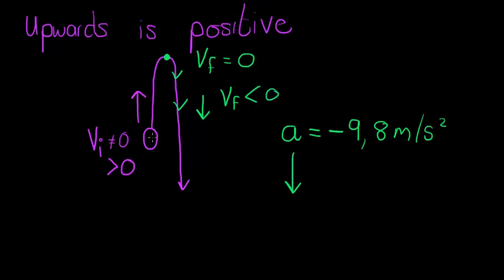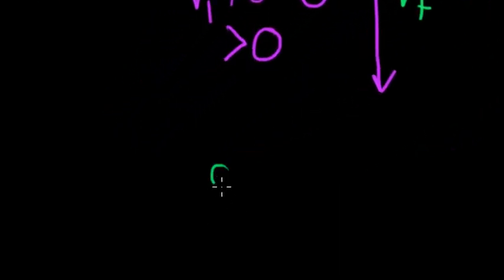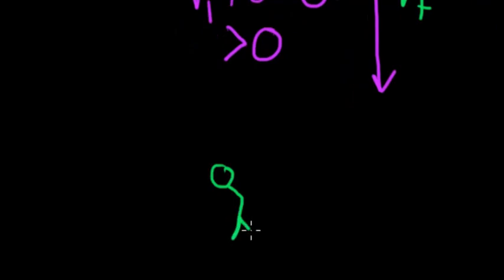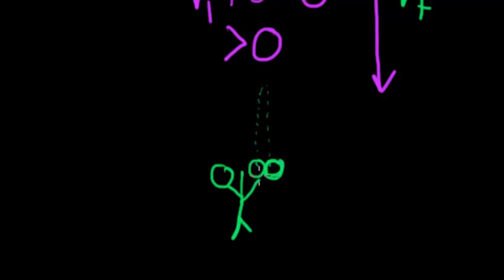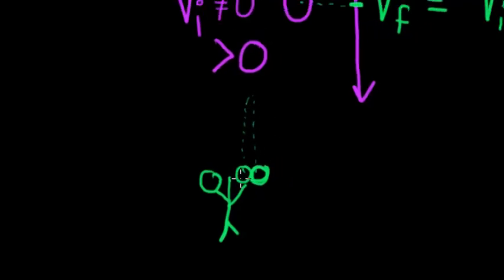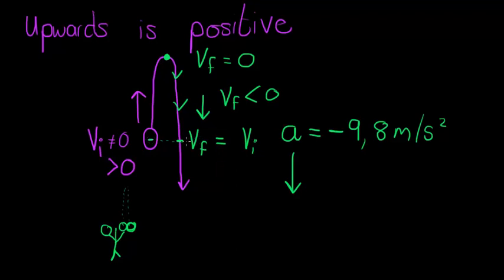When the object gets back to the point from where it was launched, the future velocity will be equal to the initial velocity. For example, if you throw a ball up in the air, when it reaches your hands again it is traveling at the same speed it was when you threw it. The only difference is that this velocity will be in the opposite direction, so it will have a negative value.